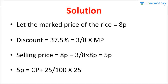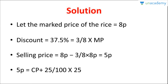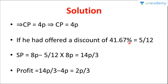The question now asks: if he had offered a discount of 41.67%, which is 5/12, what happens? With the marked price still at 8P, the new selling price = 8P − (5/12) × 8P = 8P − 10P/3 = 14P/3. So the new selling price is 14P/3.